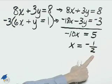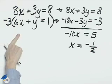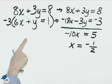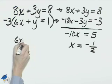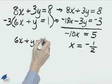Now x equals negative 1 half needs to be substituted back into one of these two equations in order to solve for y. I'll choose the second equation, 6x plus y equals 1.